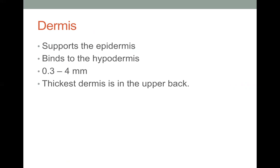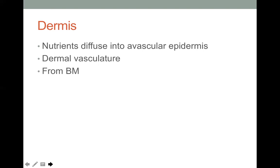The dermis is the second layer of the skin. It supports the epidermis, binds to the hypodermis, and the thickest dermis is found in the upper back. The epidermis is avascular — it has no blood vessels — so nutrients are diffused from the dermis, which has vasculature and blood supply.